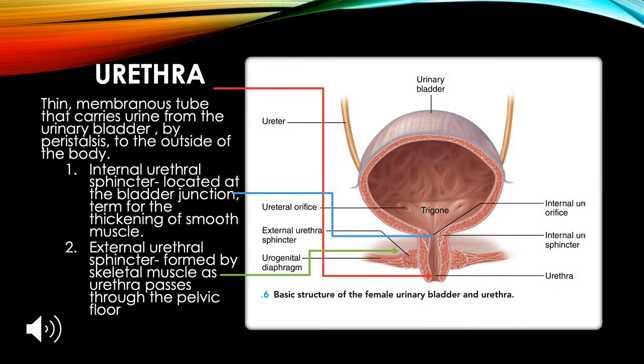The urethra is a thin membranous tube that carries urine from the urinary bladder to the outside of the body by peristalsis. The internal urethral sphincter, located at the bladder junction, is a thickening of smooth muscle. The external urethral sphincter is formed by skeletal muscle as the urethra passes through the pelvic floor.